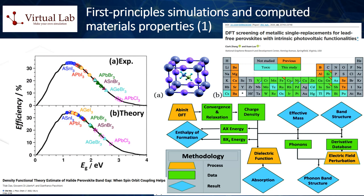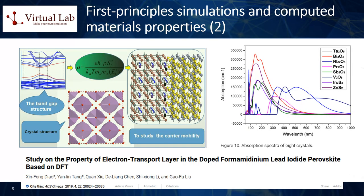When it comes to assessing the performance of novel photovoltaic materials, the following physical properties that can be computed with first principles methods are among the most relevant. One: band gap. The band gap is the energy difference between the valence band — the highest energy band that generally contains electrons — and the conduction band — the lowest energy band that is generally empty. It determines the threshold energy required for an electron to transition from the valence band to the conduction band, thereby generating an electric current. The band gap should ideally match the solar spectrum for optimal light absorption. Two: absorption spectrum. The absorption spectrum is the range of light frequencies or wavelengths that a material can absorb; it should ideally cover the broad spectrum of sunlight from infrared to visible to ultraviolet for maximum energy conversion efficiency.